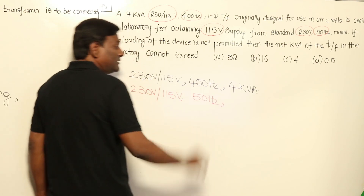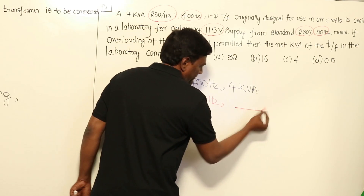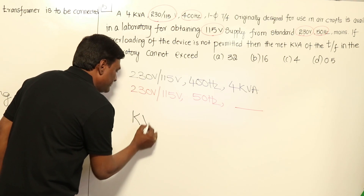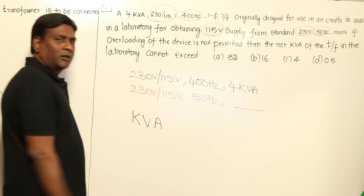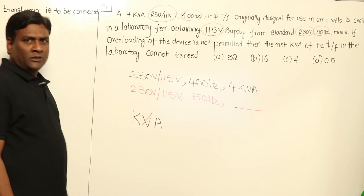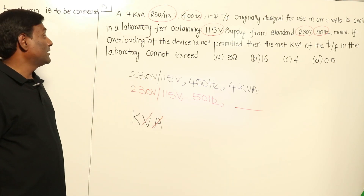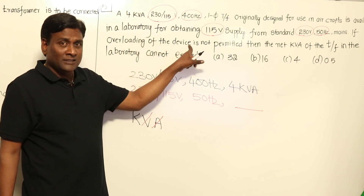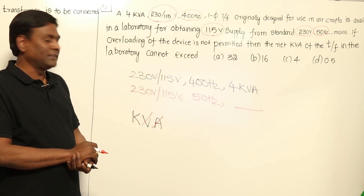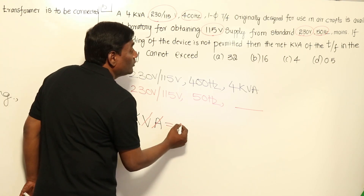Frequency is reduced by 8 times, and the question asks: what is the kVA capacity? KVA capacity equals voltage multiplied by current. Between the first and second cases, voltage rating is the same — 230/115V. Current rating will also have to be the same, because overloading is not permitted, meaning current must not exceed its rated value. Since voltages are same and currents are same, the output should be 4kVA only.